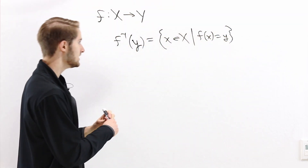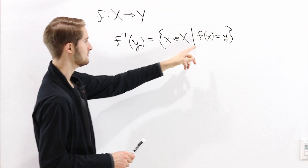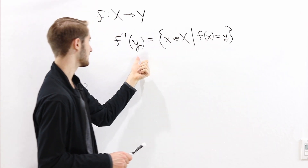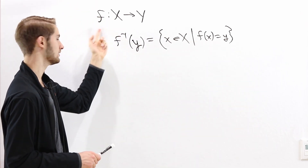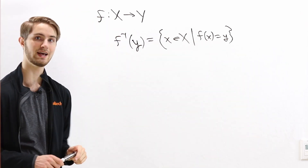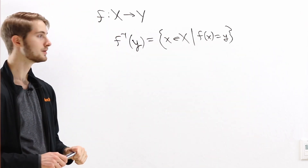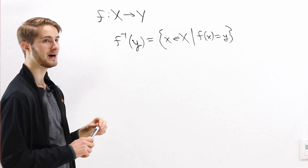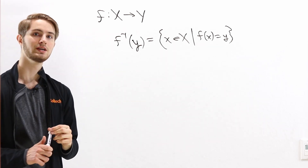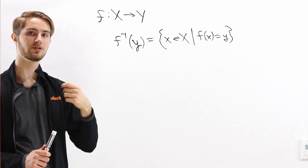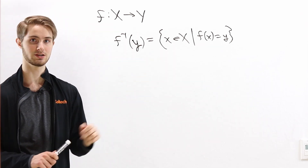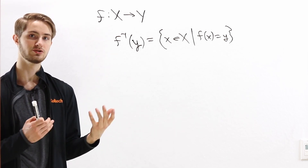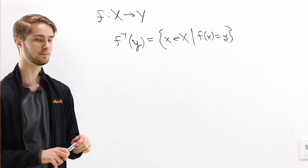So these are all of the inputs that get mapped to this specific element y under the function f. Now we say that a function is bijective if it is both injective and surjective. So let's go through each of those individually.